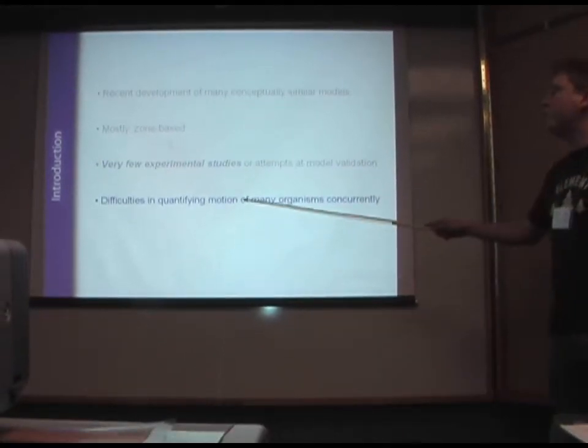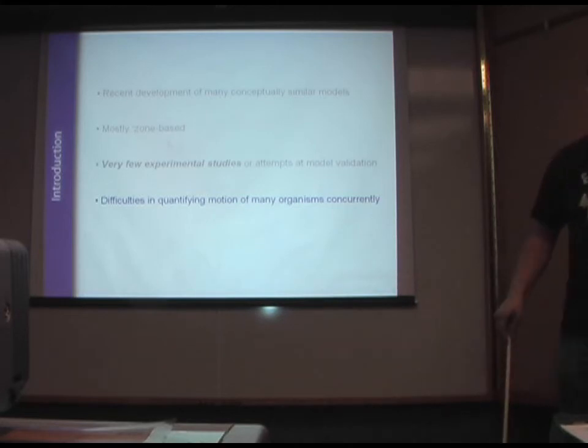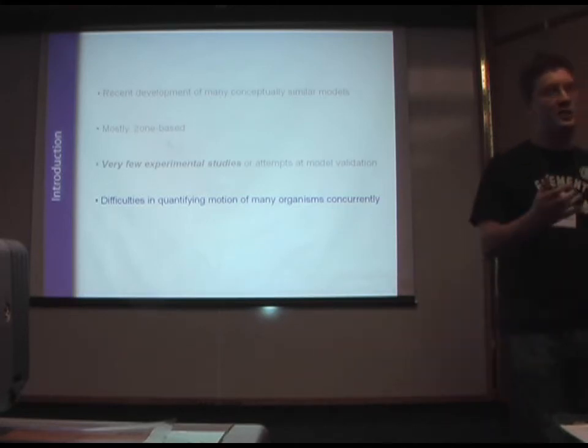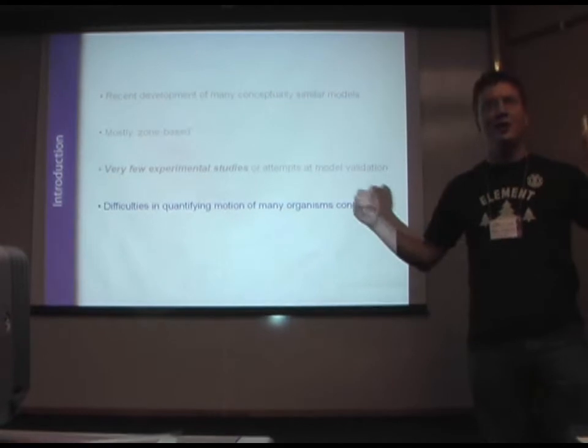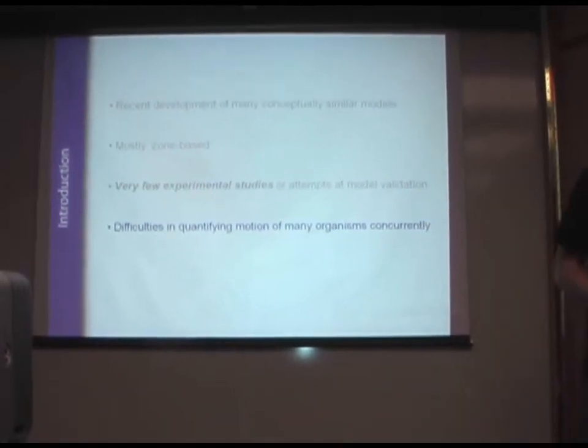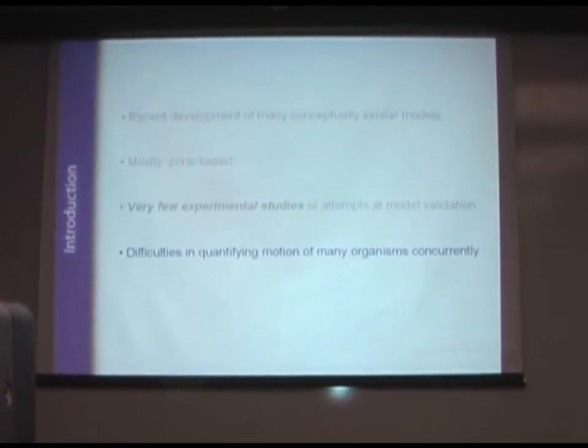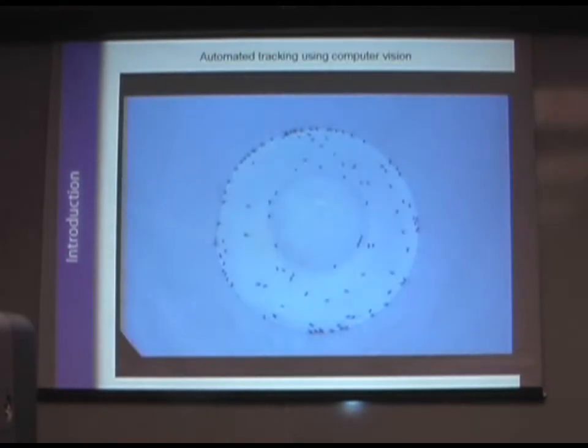And part of the problem is that there are great difficulties in quantifying the motion of many organisms concurrently. It's very easy in our simulation model to create these particles and have thousands of them running around and interacting with each other. But when we deal with reality, how can we understand this?